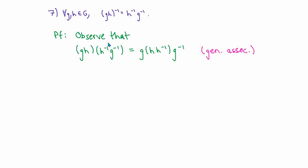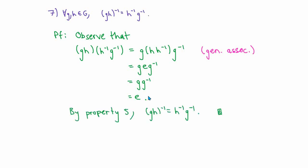To prove this, in light of property five, I only need to show that when I multiply gh by h inverse g inverse I get the identity. Using the generalized associative law, I rearrange parentheses to multiply h and h inverse together in the middle first, which gives the identity. Then whichever multiplication I do next, I get g times g inverse, which is the identity. That proves (gh) inverse equals h inverse g inverse. Notice that in this proof I never interchange the order of multiplications, because I don't know a priori that the binary operation is commutative.